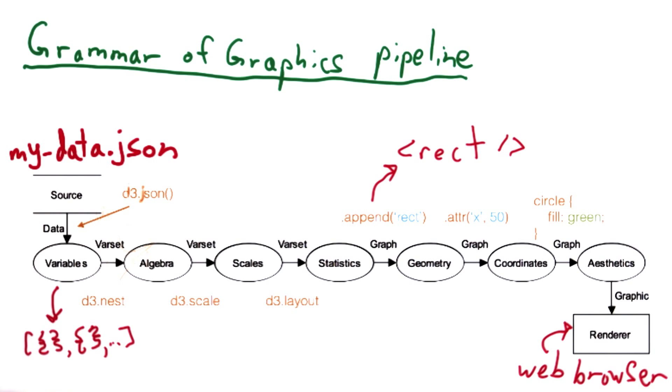I don't want to get too hung up on the specifics of each stage of this grammar of graphics pipeline, or try to relate them to D3 functions that we may not have encountered yet, such as nest, scale, and layout.